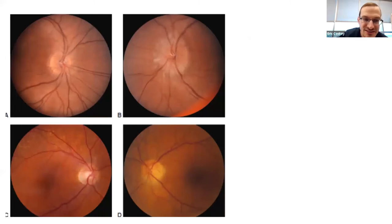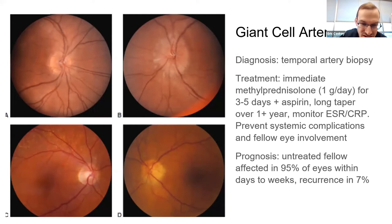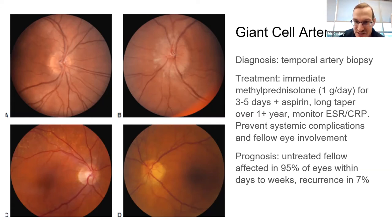Here's a typical setup for these GCA questions. The top frames are the right and left eye for someone with AION in the left eye and a disc at risk in the right eye. The bottom two show typical arteritic AION: one side doesn't have a disc at risk, and the other has that yellowish, chalky appearance indicating no blood is getting to that area.